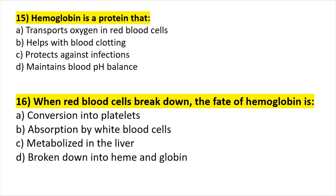Question fifteen: hemoglobin is the protein that transports oxygen in red blood cells — correct. It does not primarily help with blood clotting, protect against infections, or maintain blood pH. Its role is to transport oxygen in red blood cells.